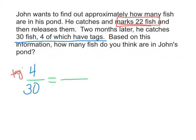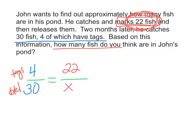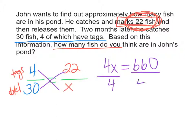The top number is the tags and the bottom number is the total. There are 22 total fish that have tags in this pond, so the 22 goes across from the four. X is what we don't know — how many fish are in the pond — so that's our total going on the bottom. To finish this, we do our cross products: 4X equals 30 times 22, which gives us 660. Dividing both sides by four gives us X equals 165.